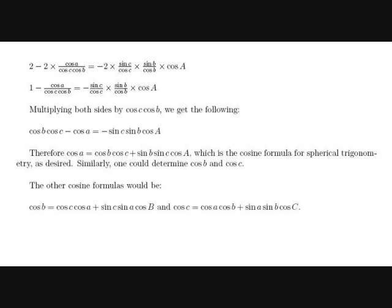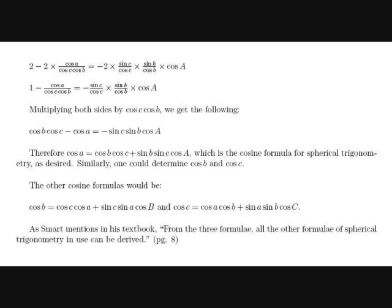Similarly, one could determine cos B and cos C. The other cosine formulas are: cos B equals cos C times cos A plus sin C times sin A times cos B; and cos C equals cos A times cos B plus sin A times sin B times cos C. As Smart mentions in his textbook, from these three formulas all other formulas in spherical trigonometry in use can be derived.